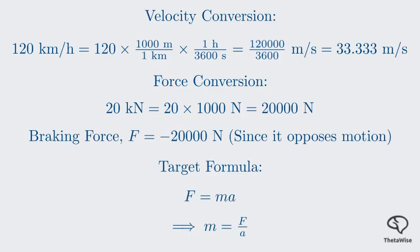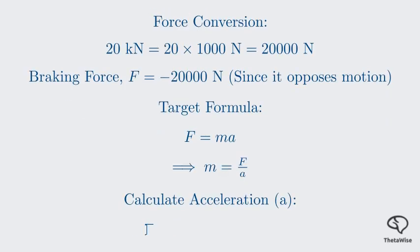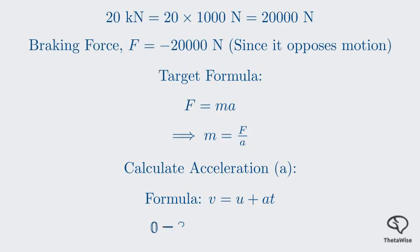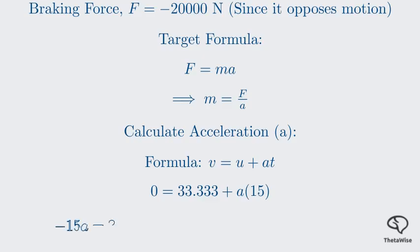We can do this using our kinematic equations. We can calculate the acceleration using the first equation of motion, V equals U plus at. We know the final and initial velocities and the time. All the pieces are there. Substituting our values, we get 0 equals 33.33 plus a times 15. Rearranging this equation to solve for A, we find that A equals negative 2.22 meters per second squared. This negative sign again confirms that the truck is decelerating.